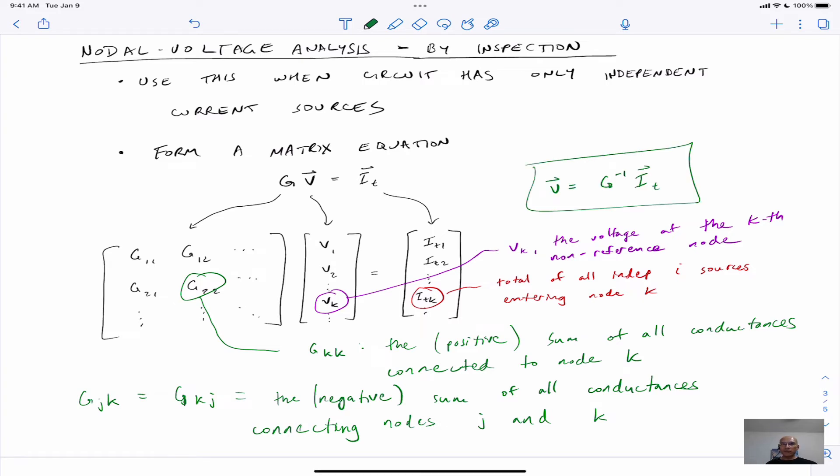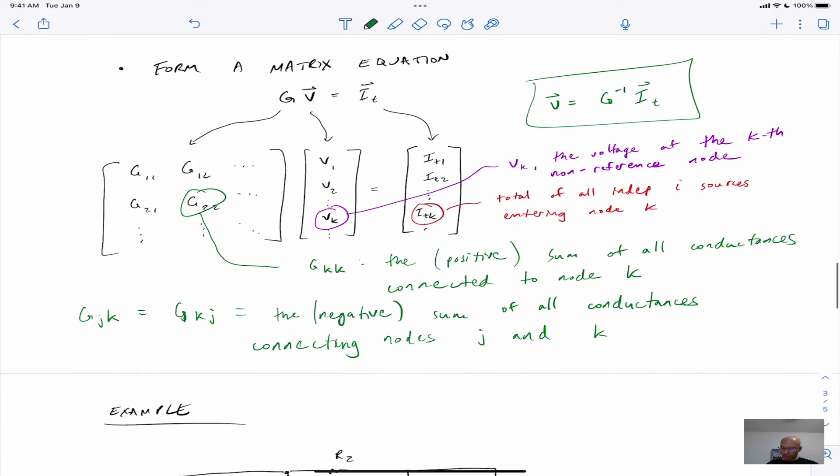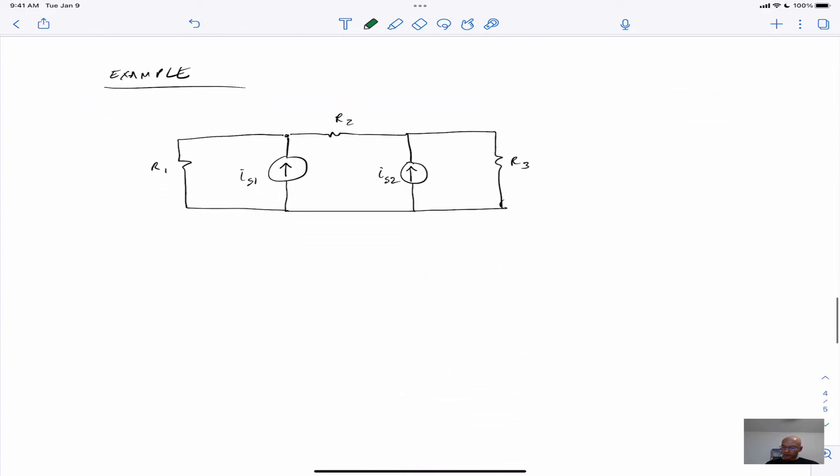So let me demonstrate with a simple circuit to show you that it actually works out like this. Here's an example. Let's identify some nodes. Here's a ground. It's a convenient ground. And then two more unknown nodes. So let's call this one A and B. We have three resistors, R1, R2, R3, and then two source currents, I1, I2. This meets the criteria for us to use this simple approach.